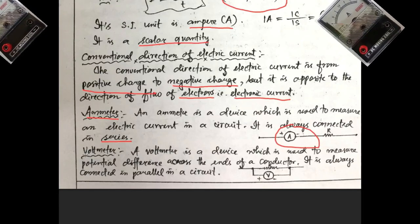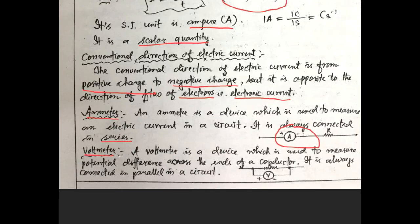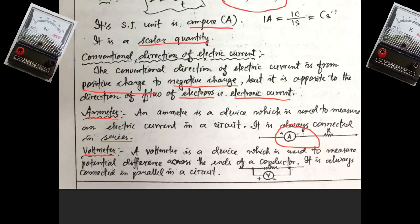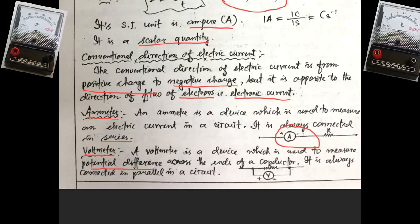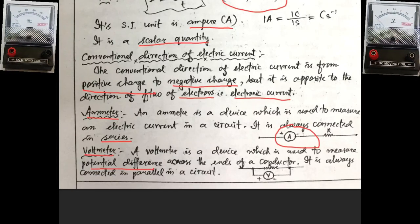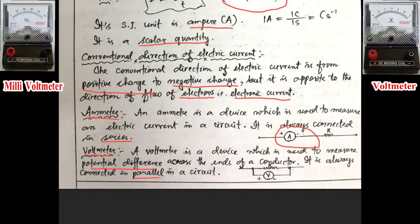Next, let us go to the next device. That is a voltmeter. A voltmeter is a device which is used to measure potential difference across the ends of a conductor. It is always connected in parallel in a circuit.